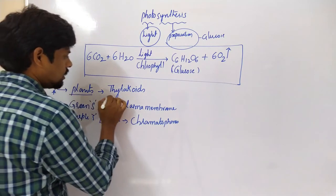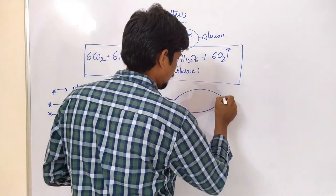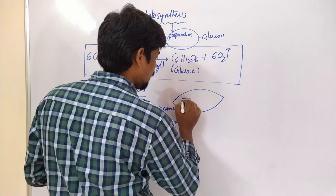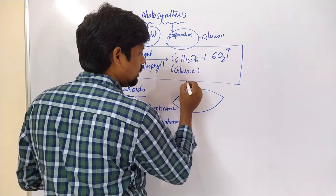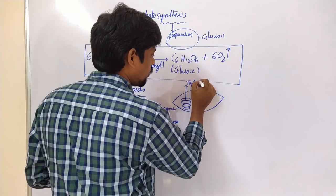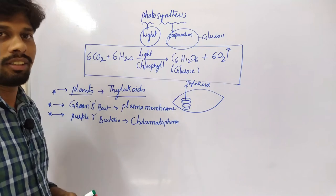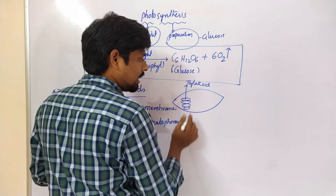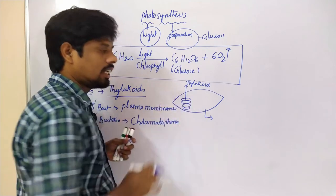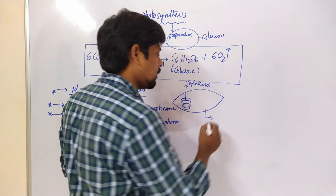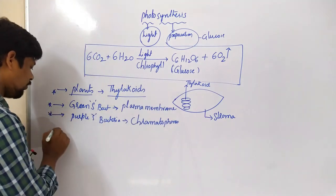Coming to plants and thylakoids. We know very well that the chloroplast contains cyclic structures called individual sacs, which are called thylakoids. In these thylakoids, the complete photosynthesis can occur. This part is the thylakoids. The empty space of the chloroplast here is called the stroma.